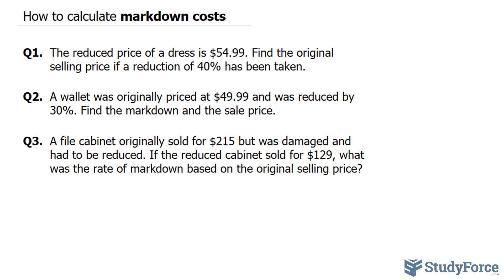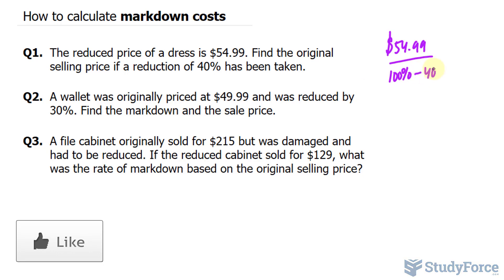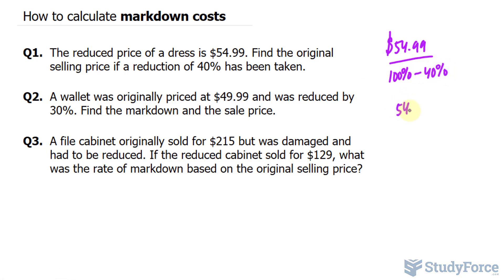We want to know the original price. To calculate the original price, we take the current amount, $54.99, and we divide it by 100% minus the reduction percent, where we end up with $54.99 divided by 60%, which when converted as a decimal is 0.6.